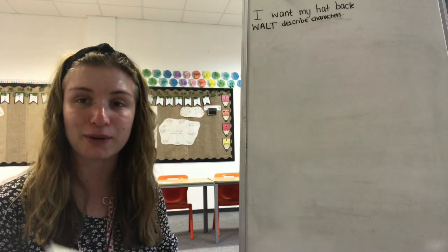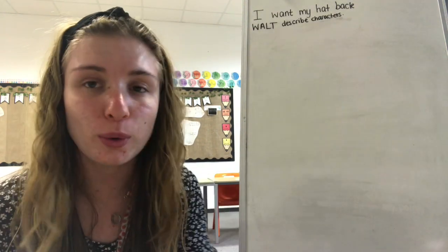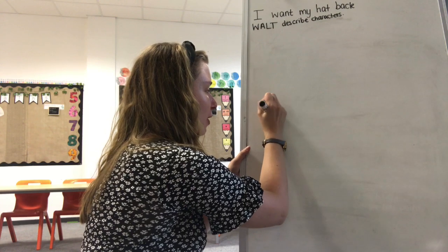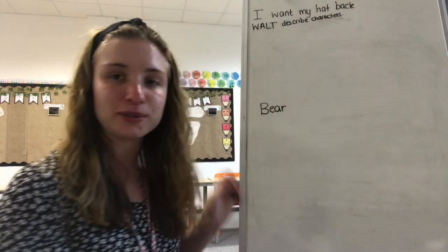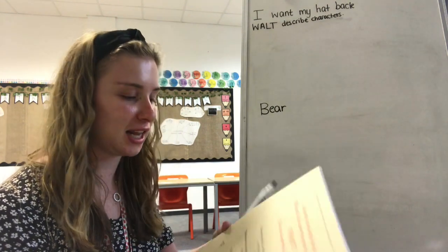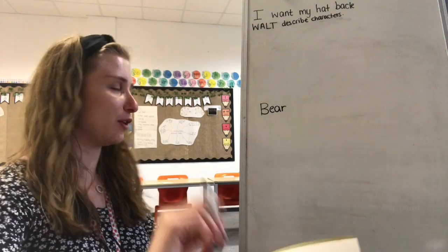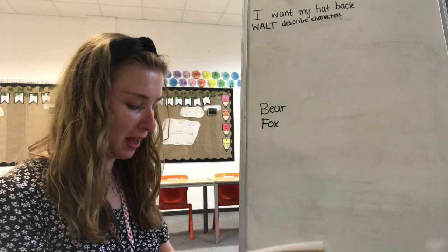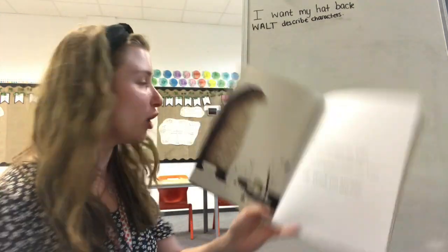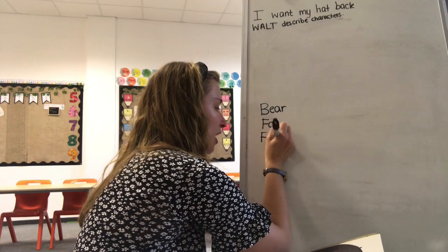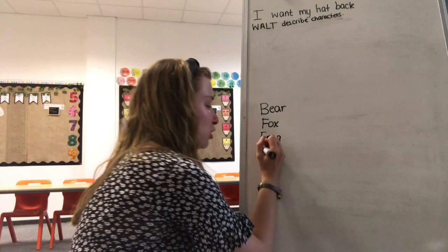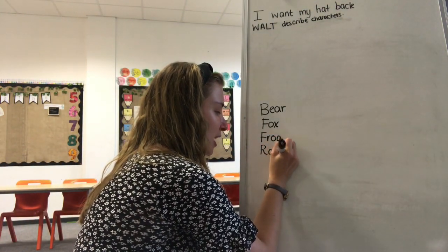So let's have a think about the characters we've met. Who have we got? We've got the bear — he's our main character. Who else have we got? Who did he meet first? He met the fox first, so we have the fox. He then met the frog. And now it wasn't a fish like I thought — it was a rabbit. So we're going to write rabbit down here.